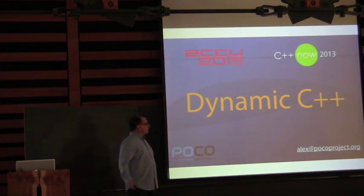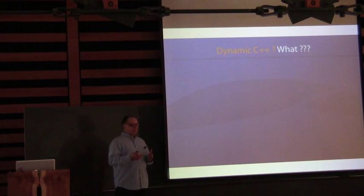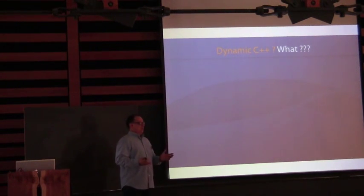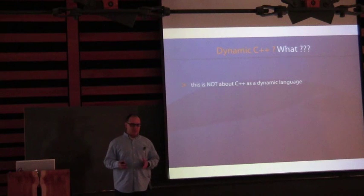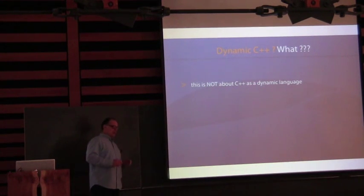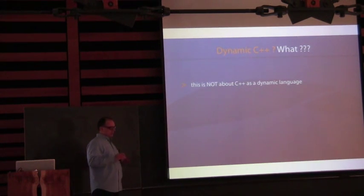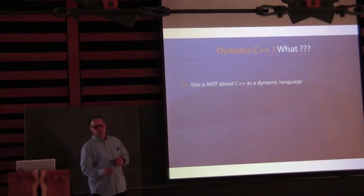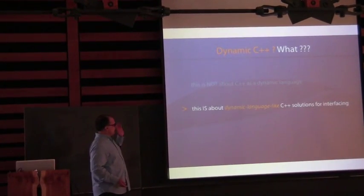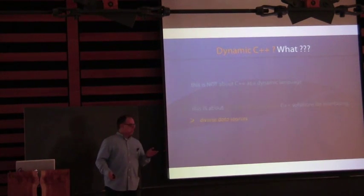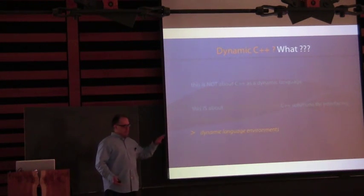Let's get to this topic. When people see dynamic C++ they think, what the heck is this about? Of course it's not about C++ being a dynamic language — C++ is a statically typed, strongly typed language with some weaknesses in the type system which, as we'll see later, can be conveniently utilized to create dynamic behavior. This is about dynamic language-like C++ solutions, which we mostly need to interface diverse data sources and dynamic language environments.